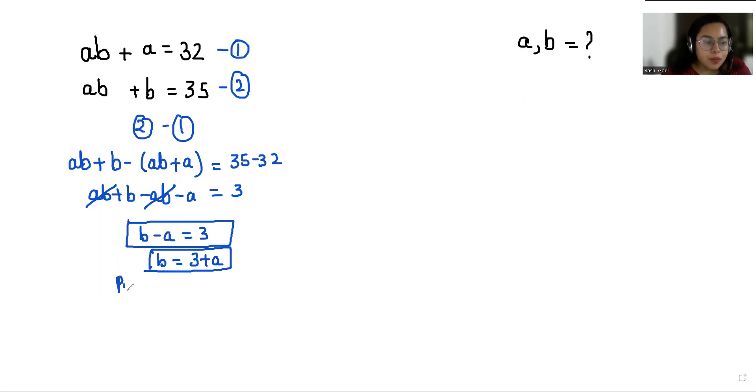Now I'm going to put B equals 3 plus A in equation 1. So A times, in place of B, 3 plus A, plus A equals 32. So we multiply: 3A plus A squared plus A equals 32.